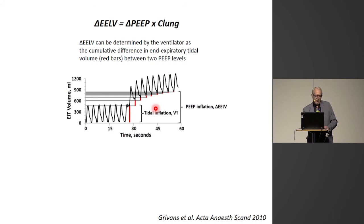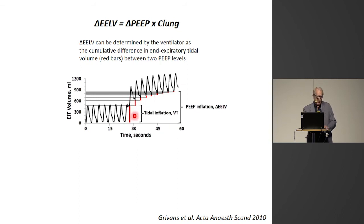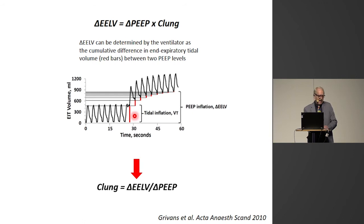The only thing we have to do is determine the delta ELV. That can be done easily by the ventilator pneumotachograph, which can accumulate all the differences in expiratory tidal volume between two PEEP levels. This is a very easy procedure that can be automated. So we can calculate C-lung as delta ELV divided by delta PEEP.